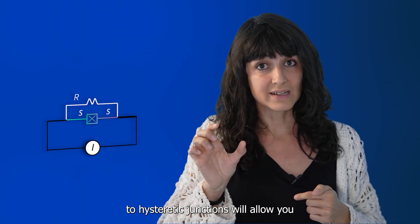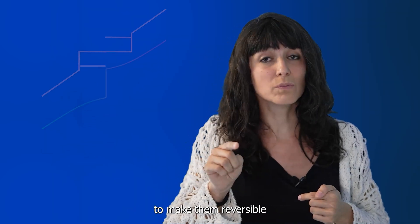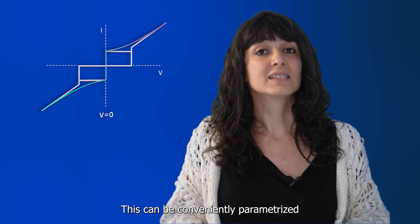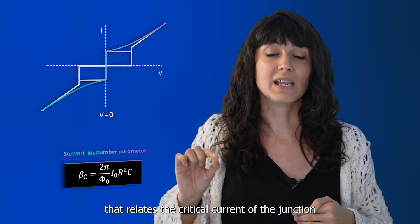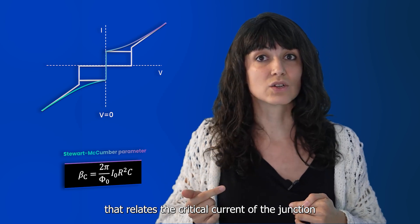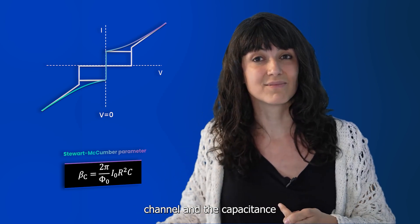Adding a low resistor to a hysteretic junction will allow you to make them reversible. This can be conveniently parametrized by the McCumber parameter βc that relates the critical current of the junction with the resistance of the ohmic channel and the capacitance.